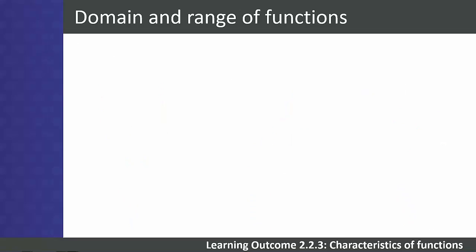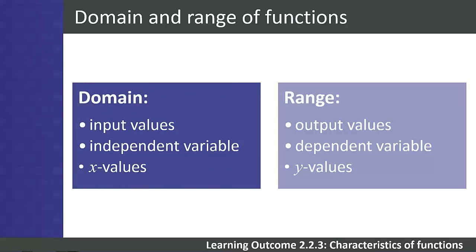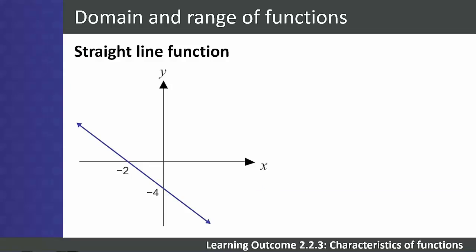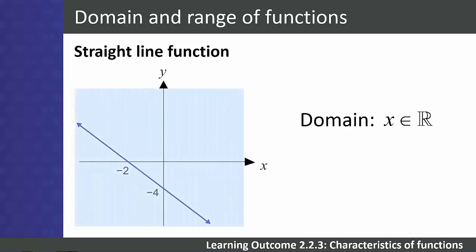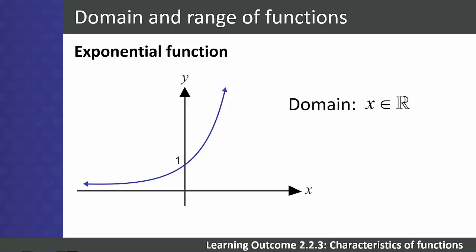Students need to state the domain and range of a function. The domain is the set of input values (independent variable, usually x), and the range is the set of output values (dependent variable, usually y). For a straight line graph, both domain and range are all real numbers. However, for an exponential function, the domain can take any real number, but the range can only take values greater than zero.